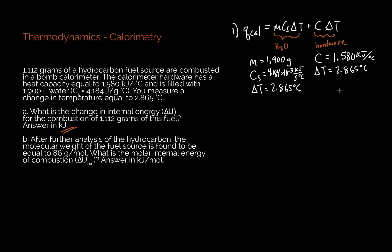Now I like to be very careful throughout this whole process. I'm going to show exactly how all of these units cancel out to get my final energy value. I'm going to take my mass, 1,900 grams, times my specific heat capacity, 4.184 times 10 to the negative 3 kilojoules per gram degrees Celsius, times my change in temperature, 2.865 degrees C.